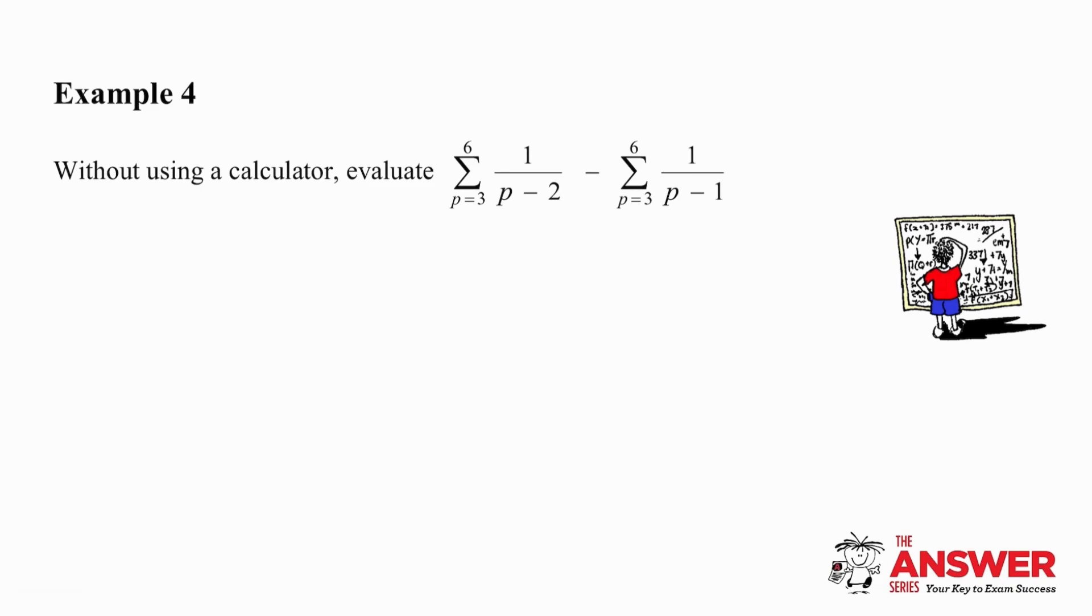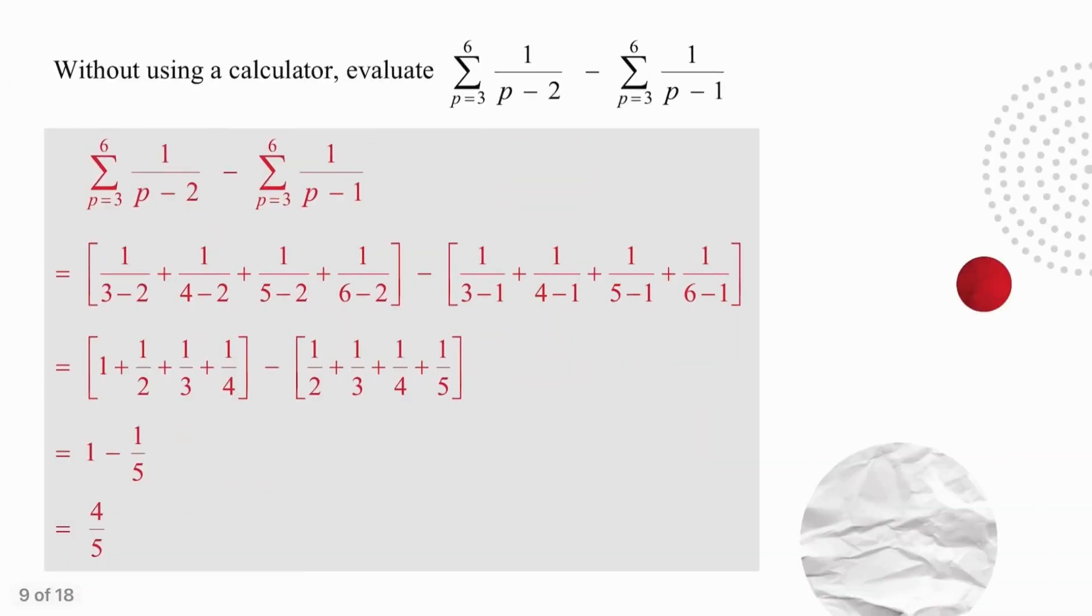This looks complicated, but isn't. Pause the video and try it on your own. By substituting the values of p from 3 to 6 in both expressions, you will arrive at your answer as long as you are careful and methodical.